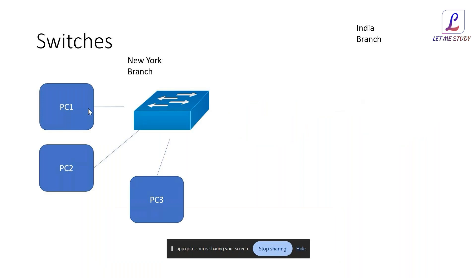Switch stacking is a different concept — where two physical switches are made into a single virtual switch. Only specific Cisco model numbers support stacking via a dedicated stacking port. In that scenario both physical boxes are treated as one logical device. The cascading scenario I'm describing allows the second switch to also operate as a separate, independent device.